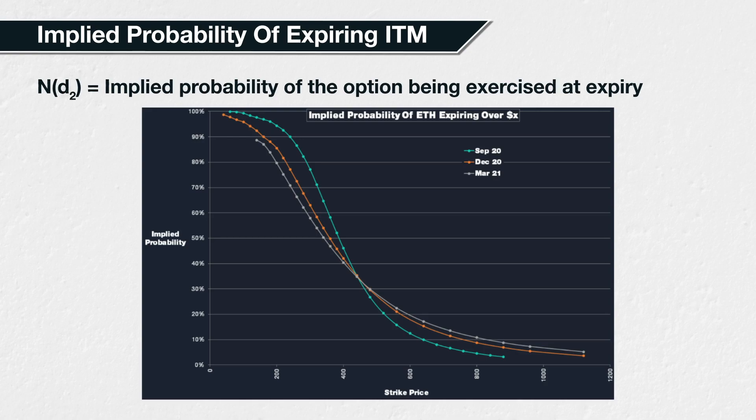We only gave the Black-Scholes formula for the call option above. There is one for puts as well, of course, though it is derived from the formula for calls using something called put-call parity.